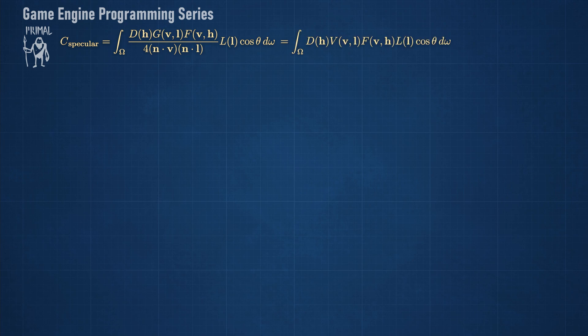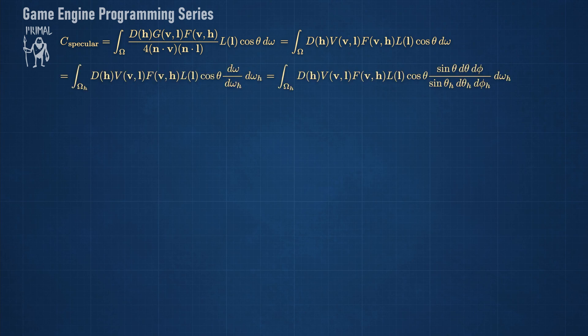Since the chosen probability density function is with respect to the halfway vector, we have to express this integral in terms of the halfway vector as well. We can do this by a change of variables.